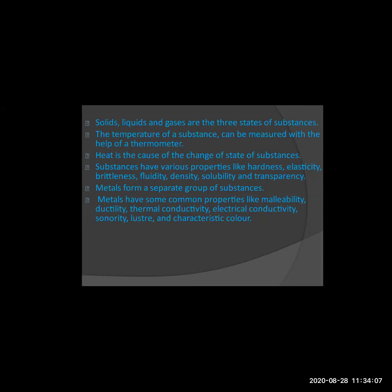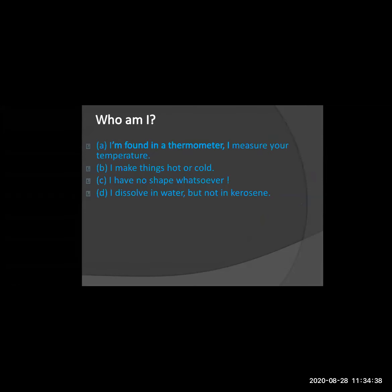Metals form a separate group — substances and metals are different. The properties of metals are different from the properties of substances. The properties of metals are: malleability, ductility, thermal conductivity, electrical conductivity, sonority, luster, and characteristic color. Now it is question and answer time — we will see the questions and answers afterwards.